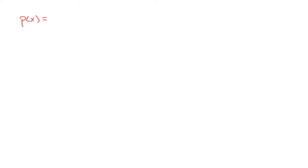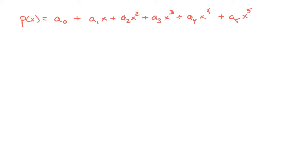Let's take a deeper look at where this formula comes from. For simplicity, suppose we have a polynomial p(x) with representation: a₀ + a₁x + a₂x² + a₃x³ + a₄x⁴ + a₅x⁵. If we wanted to recover these coefficients using calculus, we can take derivatives and then evaluate. If we just evaluate our polynomial at zero, every term with an x goes to zero and we're left with a₀.